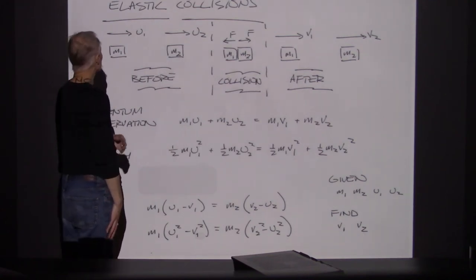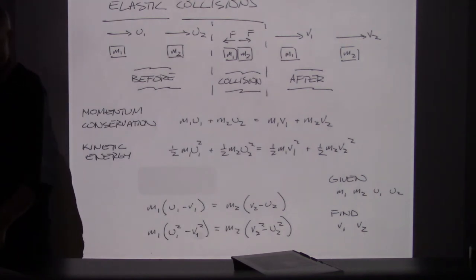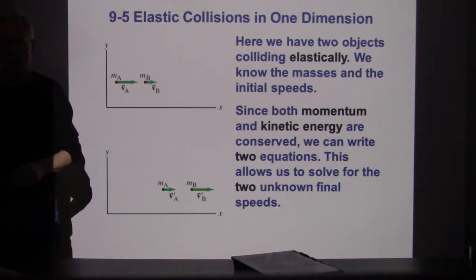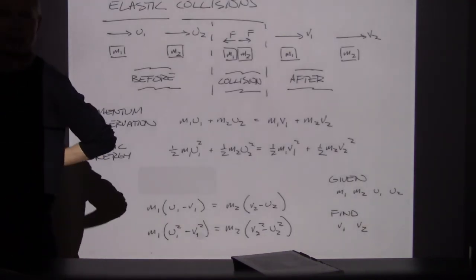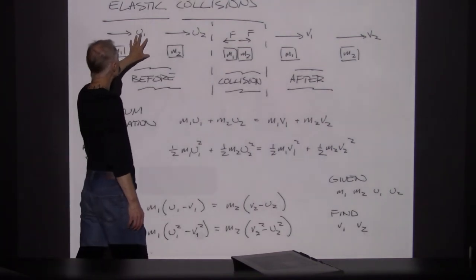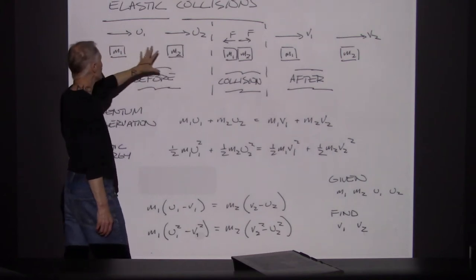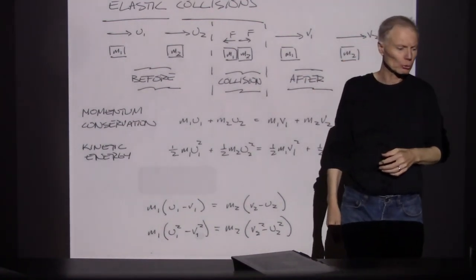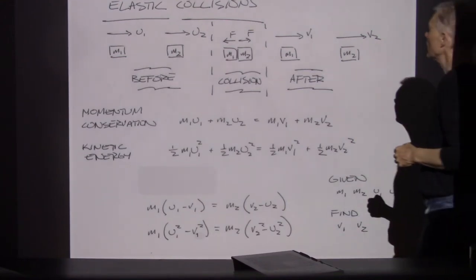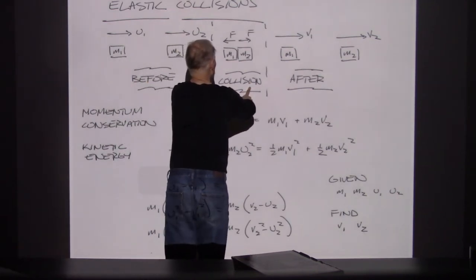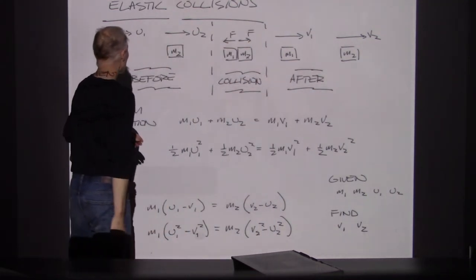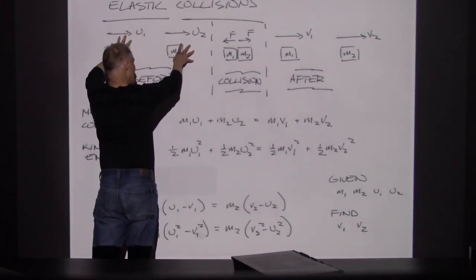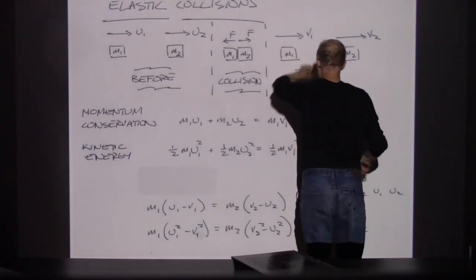The textbook uses V1 prime and V2 prime, but I use U1 and U2 for velocities coming in, and V1 and V2 after. Momentum conservation says M1U1 plus M2U2 equals M1V1 plus M2V2. That's one equation for momentum in this one-dimensional problem, where all the momentum is exclusively in the x direction.